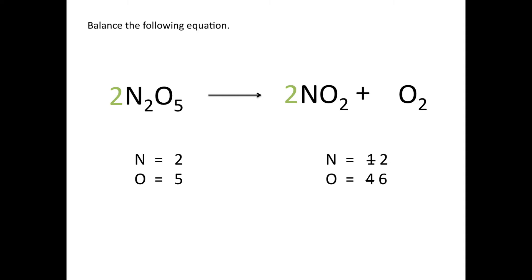Placing a 2 in front of N2O5 changes the number of nitrogen atoms on the reactant side. With two molecules of N2O5, that's two nitrogens in each molecule for a total of four nitrogen atoms, and five oxygen atoms in each molecule for a total of ten oxygen atoms on the reactant side. Sometimes when balancing equations it seems like you're just going back and forth — if this is taking forever, you may have made a mistake, so it's a good idea to start over.